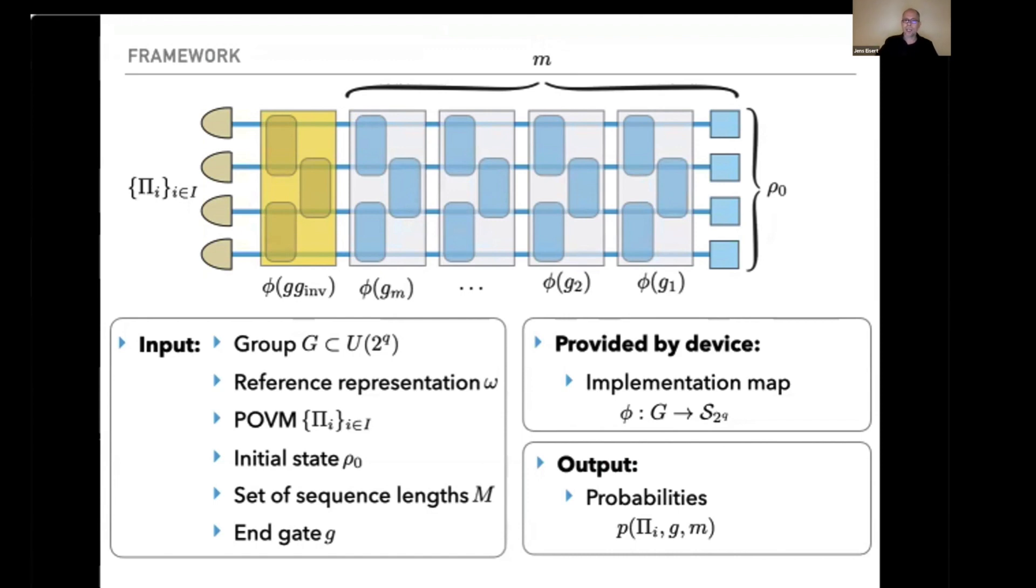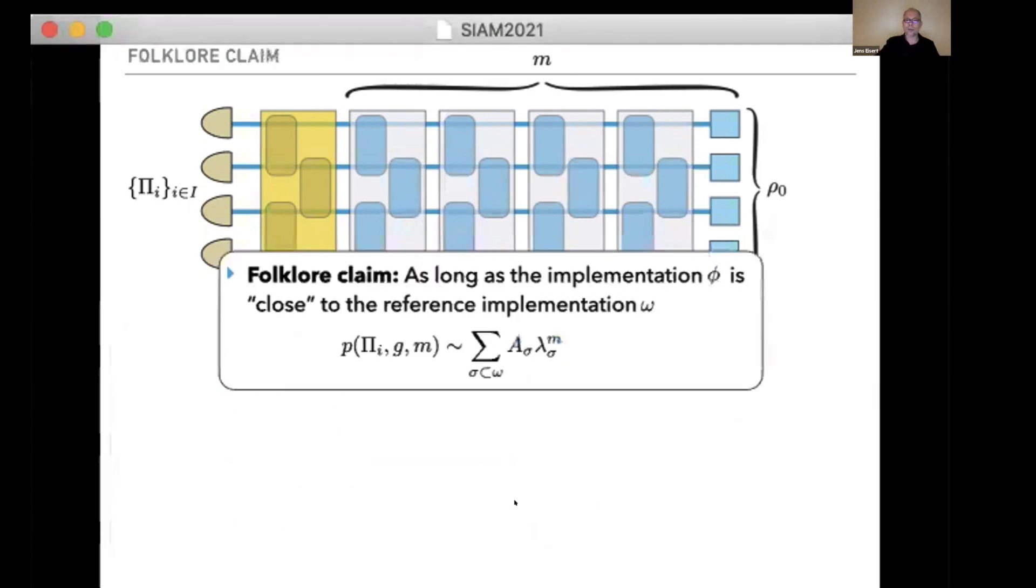There is a hope, a folklore claim, that after one has picked the group and all that, these data are basically describing a linear combination of exponentials, where the decay of these decaying exponentials depends on the gates you implement. By varying the sequence length, one can say something about the implementation map. As long as the implementation is in some sense close to the reference representation—but is this really true and what does close mean at the end of the day?